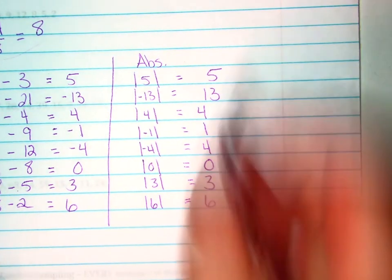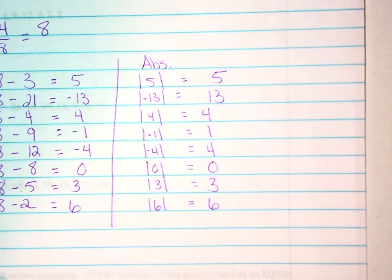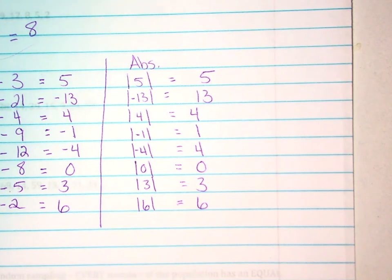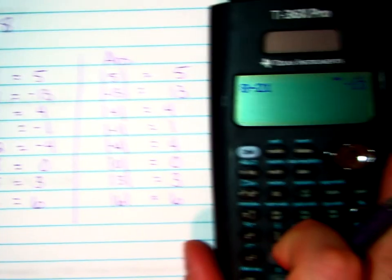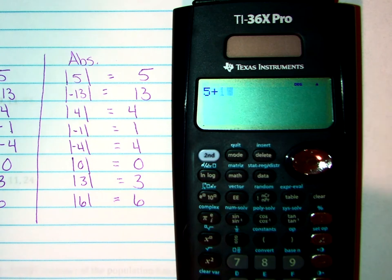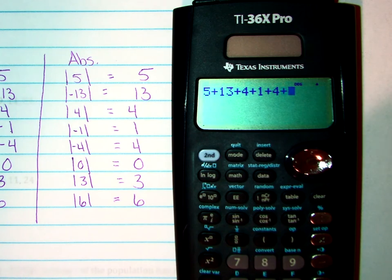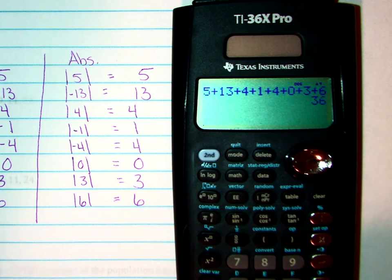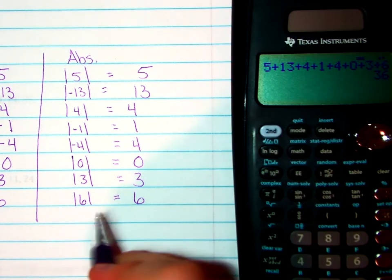And then the very last step is to add this row up and find its average. So I'm going to bring the calculator back: 5 plus 13 plus 4 plus 1 plus 4 plus 0 plus 3 plus 6. That would give me a value of 36.